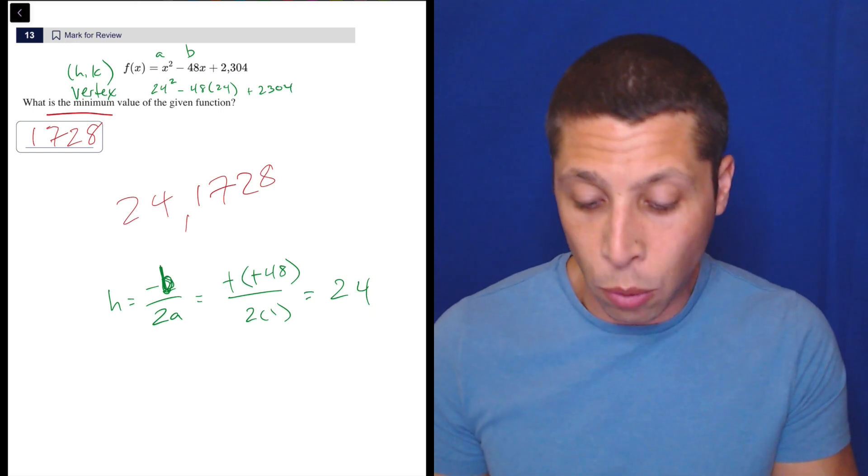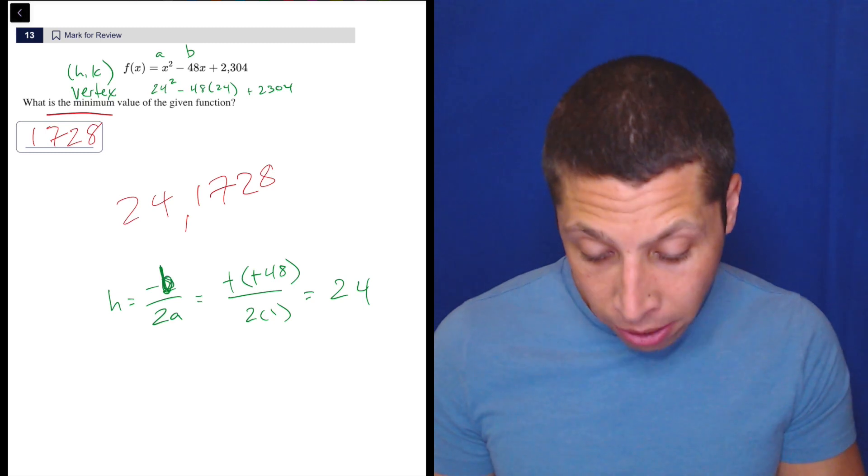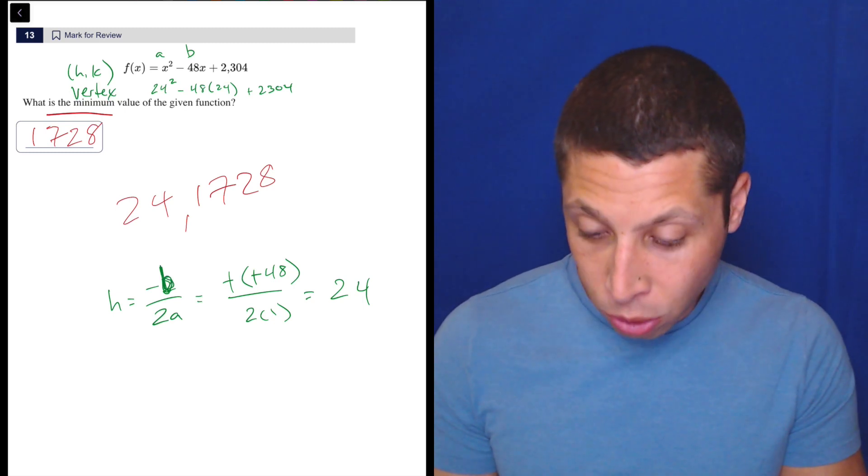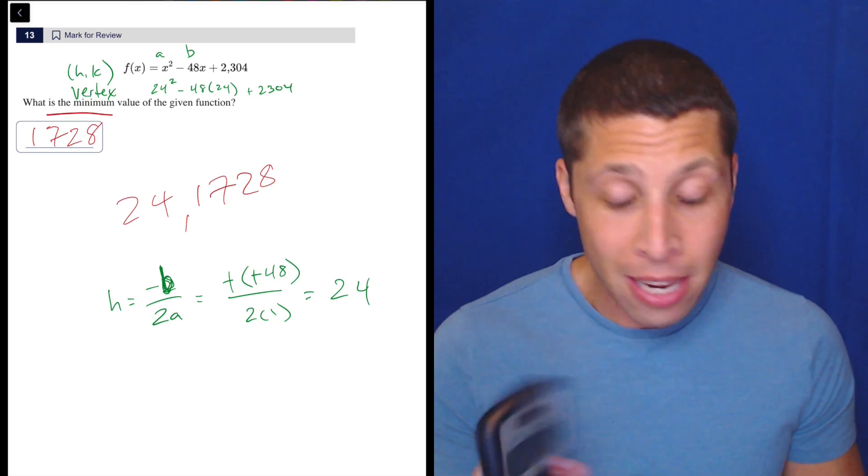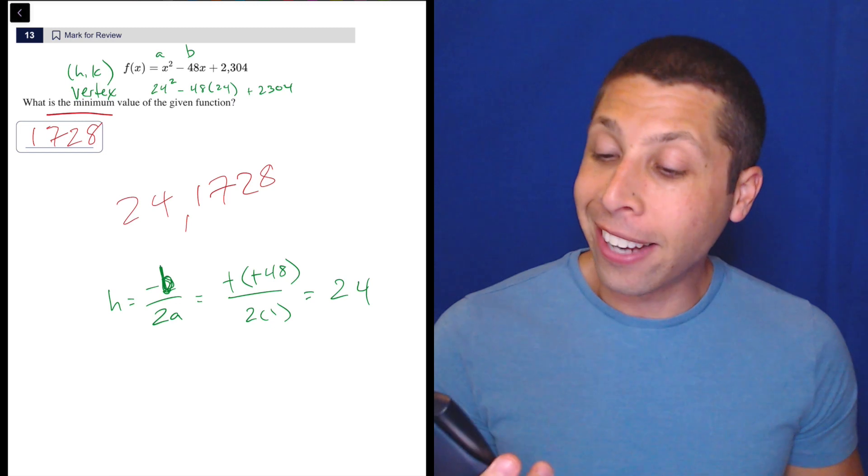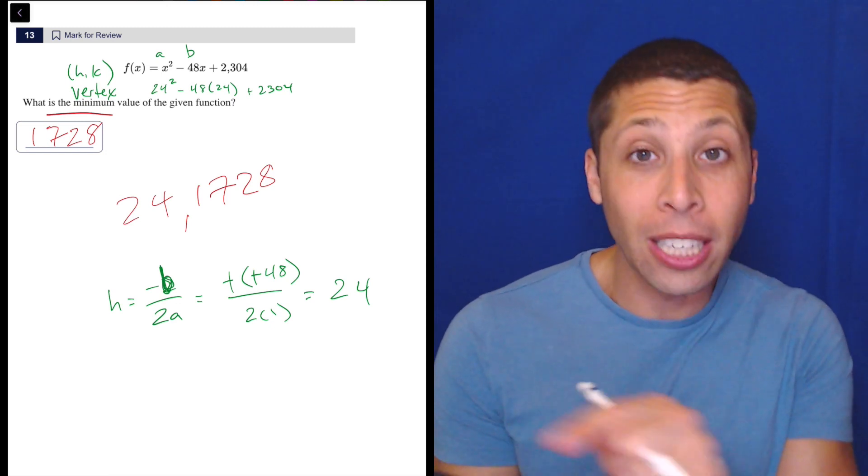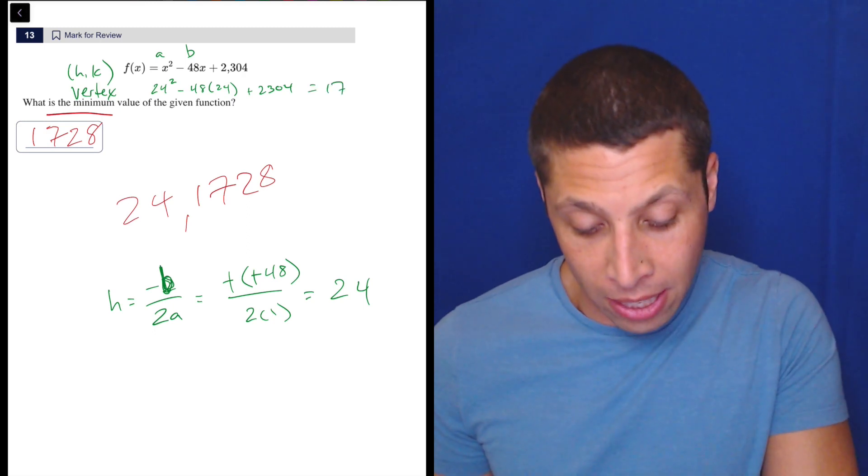You could put it into Desmos if you want. Usually for just simple arithmetic, I go in here. So 24 squared minus 48 times 24 plus 2304 - I'm just typing it all in one line. Maybe that's risky, but I think that's what you would do. Calculators sometimes you can mistype, so I'm going to look at this screen and make sure I typed it right. But I do get the same thing, the 1728.